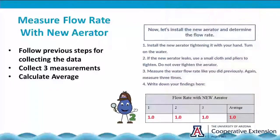Now that we have a new aerator, we're going to measure the water flow rate with the new aerator by following the same steps as before, and write your findings on the flow rate with new aerator table. You will take three measurements and then calculate the average. This will give you the average flow rate with the new aerator.